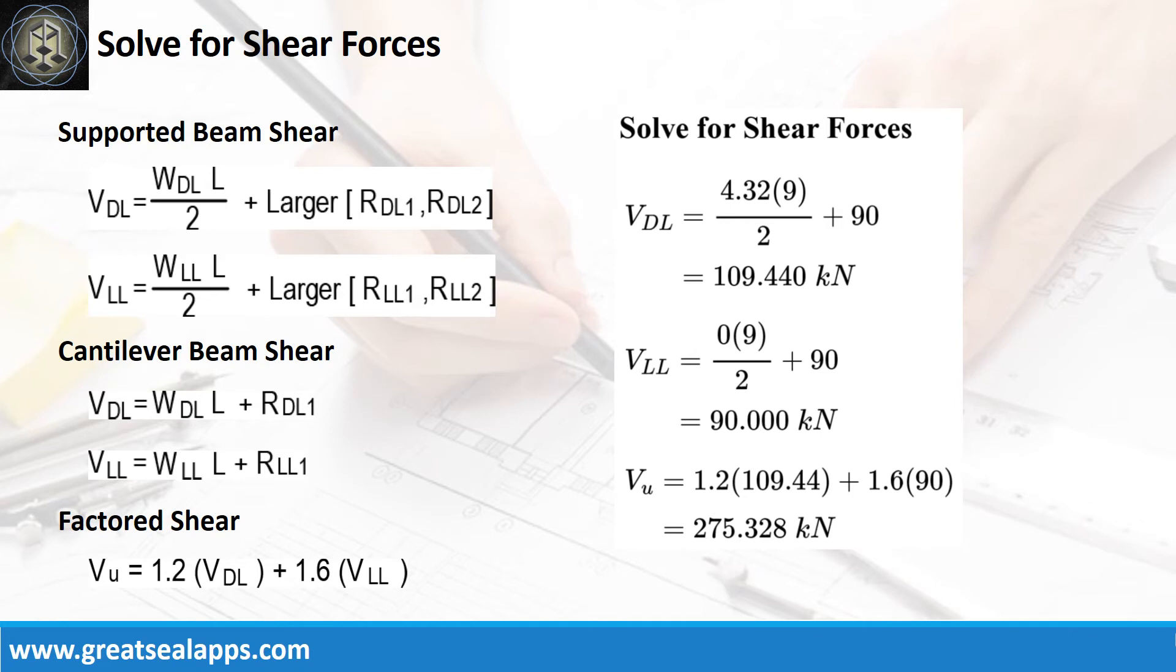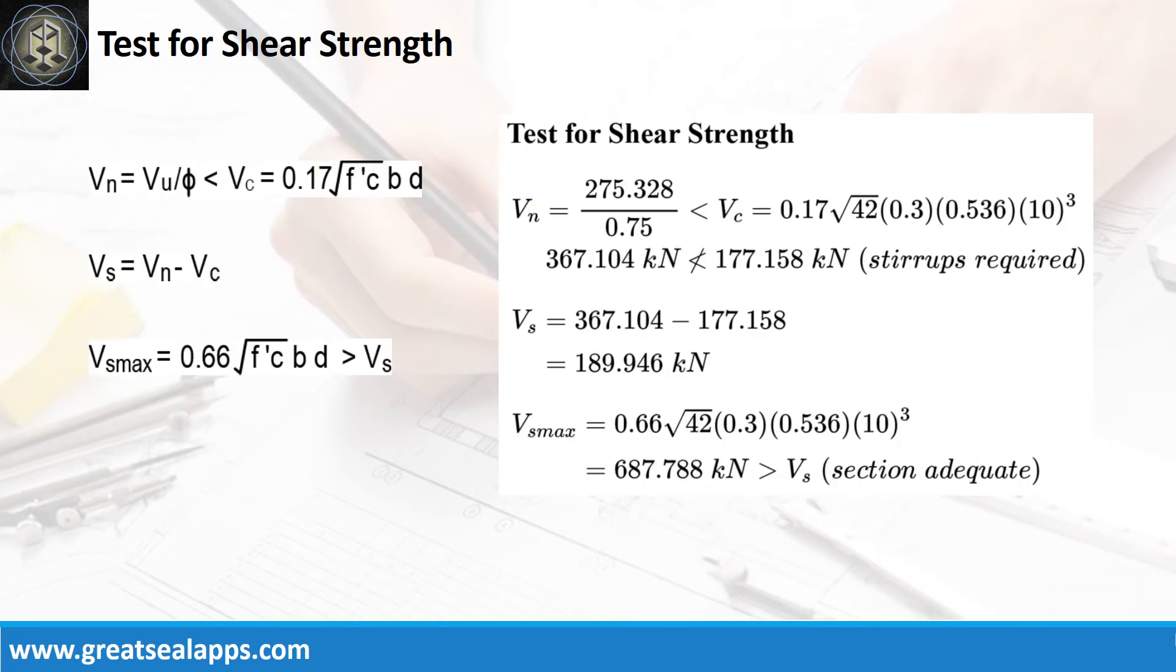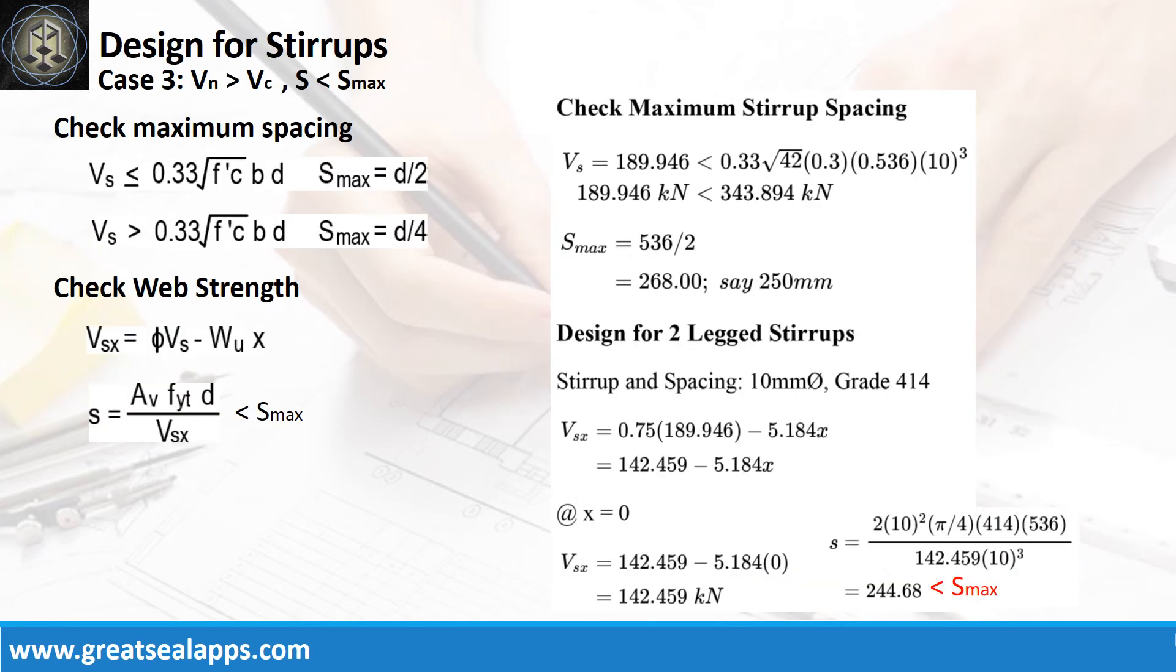The shear force from dead load is 109.44 kN, and live load is 90 kN, for a factored shear force of 275.328 kN. The nominal shear force is 367.104 kN, greater than 177.158 kN concrete capacity. Additional shear capacity from stirrup is 189.946 kN, less than 687.788 kN maximum stirrup capacity. The maximum stirrup spacing is 250 millimeters.